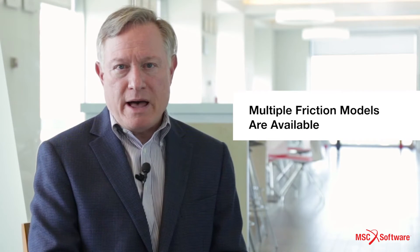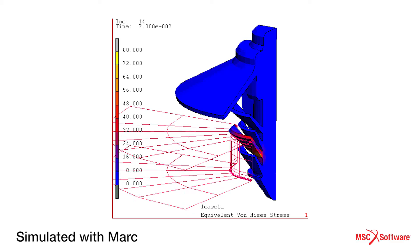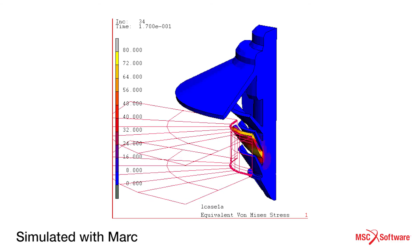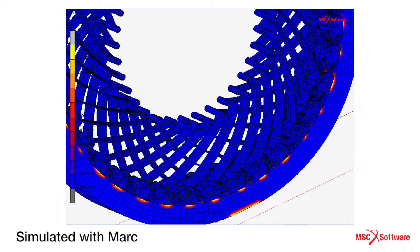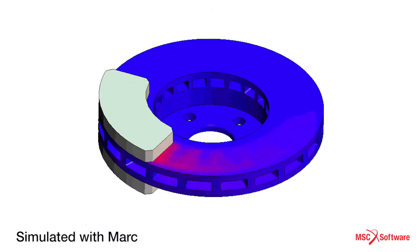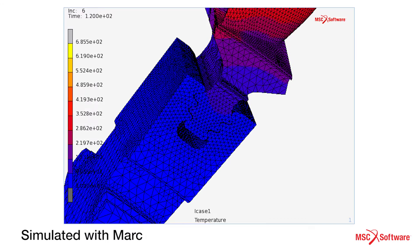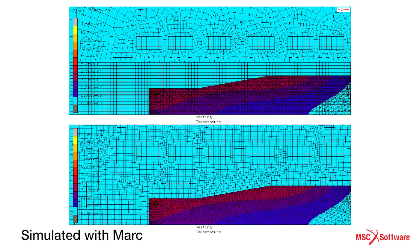Multiple friction models are available. This contact capability can not only be used for a structural analysis problem, but also for a heat transfer analysis or a coupled analysis.